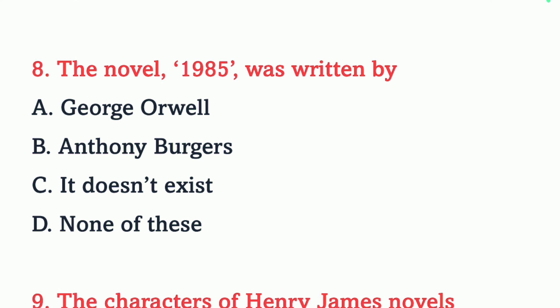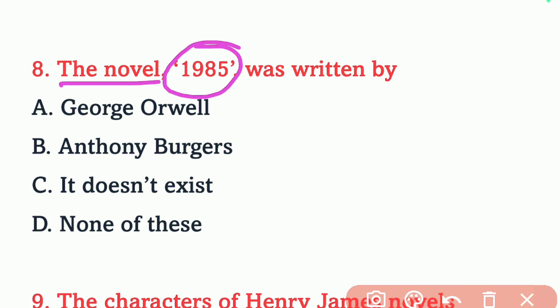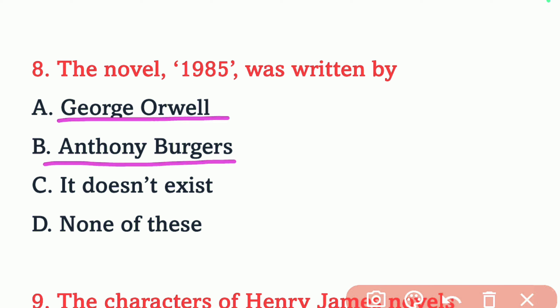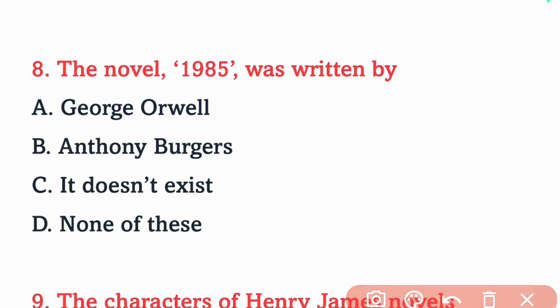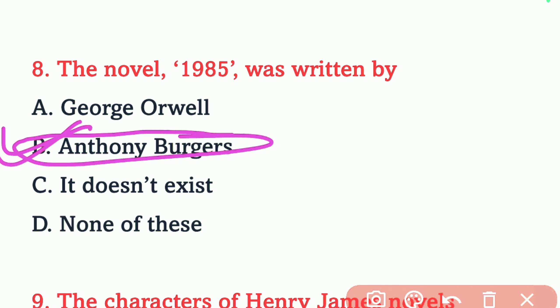Question number 8. The novel 1985 was written by George Orwell, Anthony Burgess, it doesn't exist, or none of these? The correct answer is Anthony Burgess. Option B is the right answer.